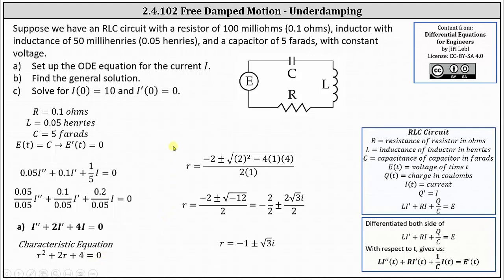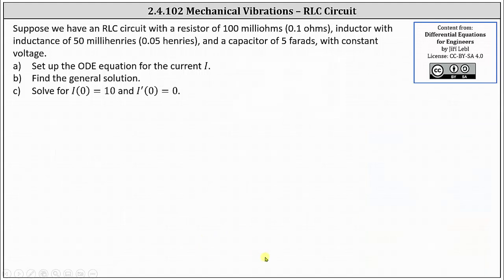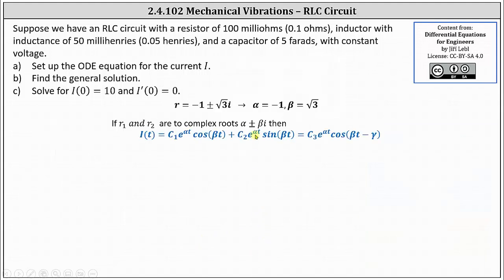Using the quadratic formula and simplifying, we have two roots: negative one plus or minus square root of three times i. Notice we have two complex roots, which indicates the form of the general solution. Assuming the complex roots are in the form alpha plus or minus beta i, alpha is negative one and beta is square root three.